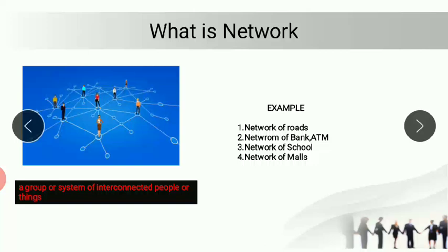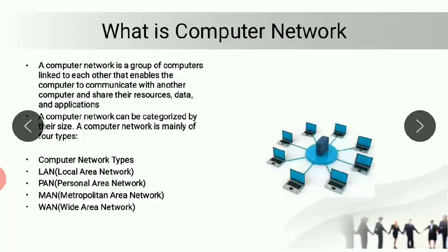Next, what is a computer network? Earlier we talked about networks as groups of people, things, or roads. A computer network means a group of computers connected with each other, linked so that they are able to communicate with one another. We have four different types of computer network: LAN, MAN, PAN, and WAN.